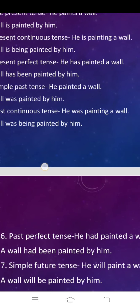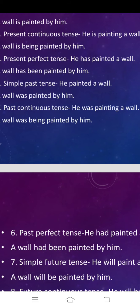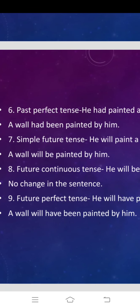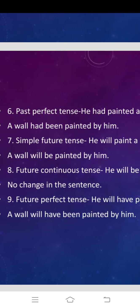Similarly, in past continuous tense: he was painting a wall becomes a wall was being painted by him. In continuous tense, 'being' is used. And in past perfect tense, 'been' has to be used. For example, he had painted a wall becomes: a wall had been painted by him.